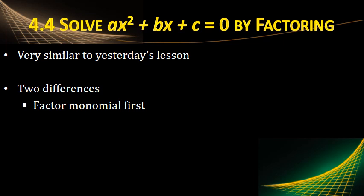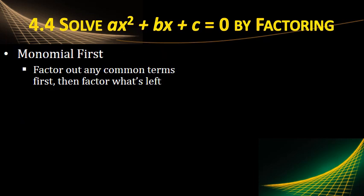And we're also adding factoring the monomial first. So we have monomials, which would be one numbers, and the a. So the first thing you're supposed to do when you factor is factor out the monomial first. That means you factor out any common terms, and then you factor what's left.